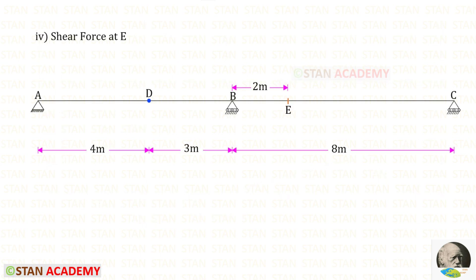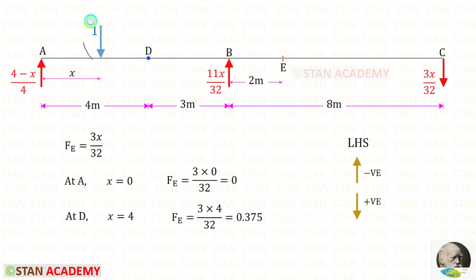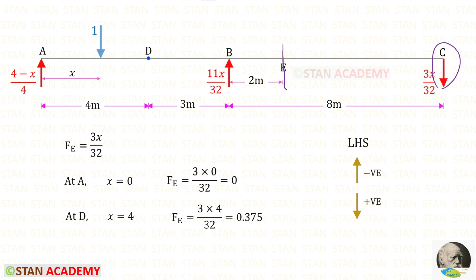Now, we are going to draw the ILD for the shear force at point E. Point E is located at a distance of 2 meters from point B. First, let us keep the unit load between A and D. To find the shear force at point E, we can use the left-hand side rule: upwards negative and downwards positive. Up to point E, we have only RC acting downwards, so it will be positive. At point A, X will be 0, so Fe will be 0. At point D, X will be 4, so Fe will be 0.375.